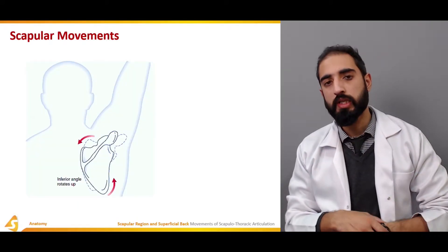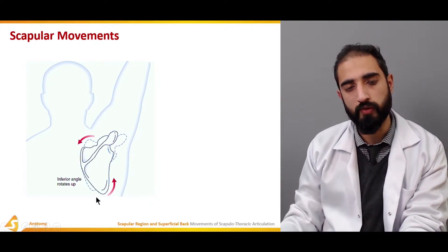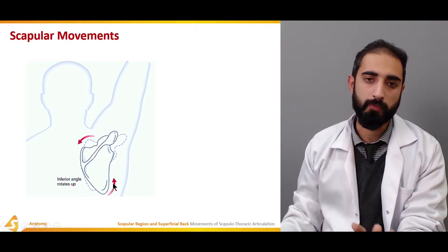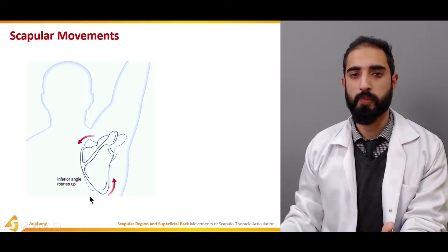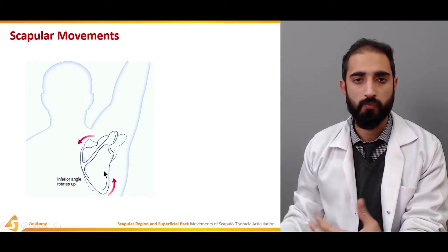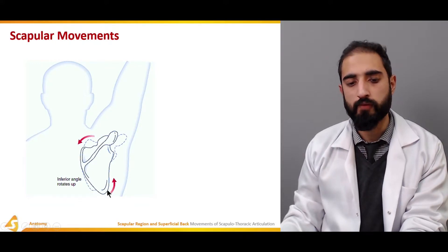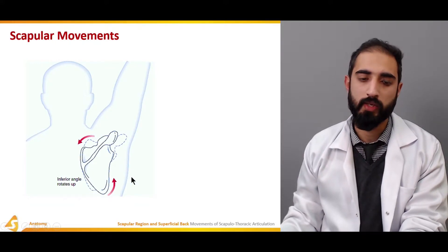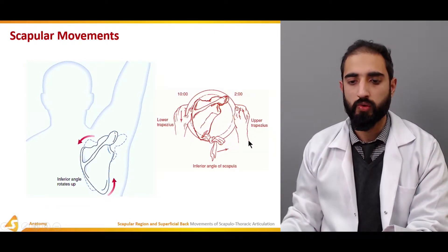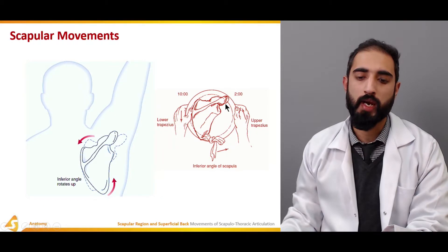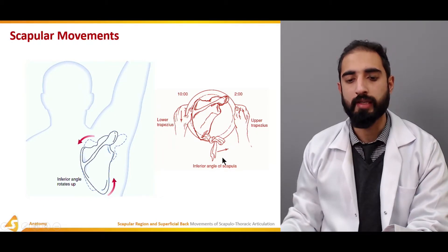To understand upward rotation of the scapula, we need to look at the inferior angle, which we can palpate, inspect, and assess in patients or athletes. If this angle moves upward, it indicates that upward rotation is occurring. Upward rotation is performed by the coupling of the upper trapezius, lower trapezius, and serratus anterior.